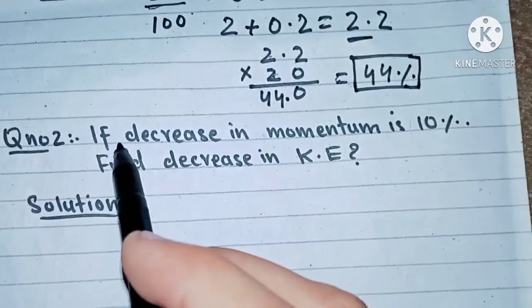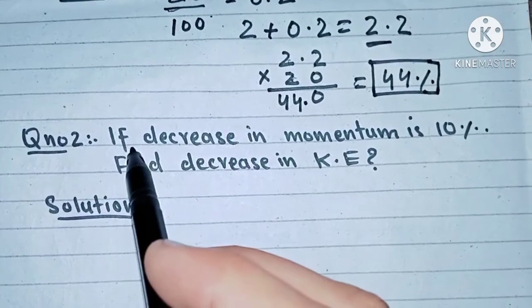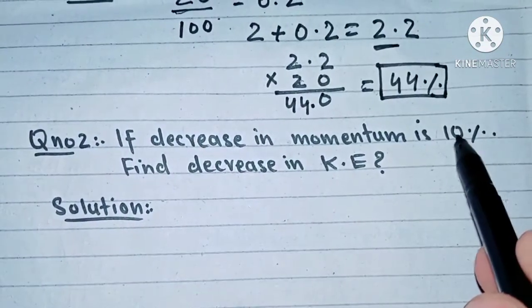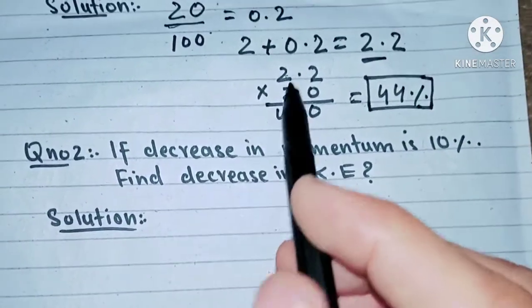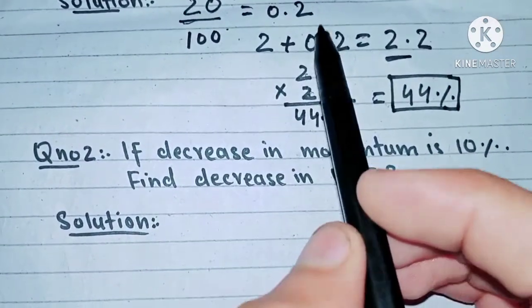Another question: if decrease in momentum is given, like if decrease in momentum is 10 percent, find decrease in kinetic energy. So here you will have to change just this step.